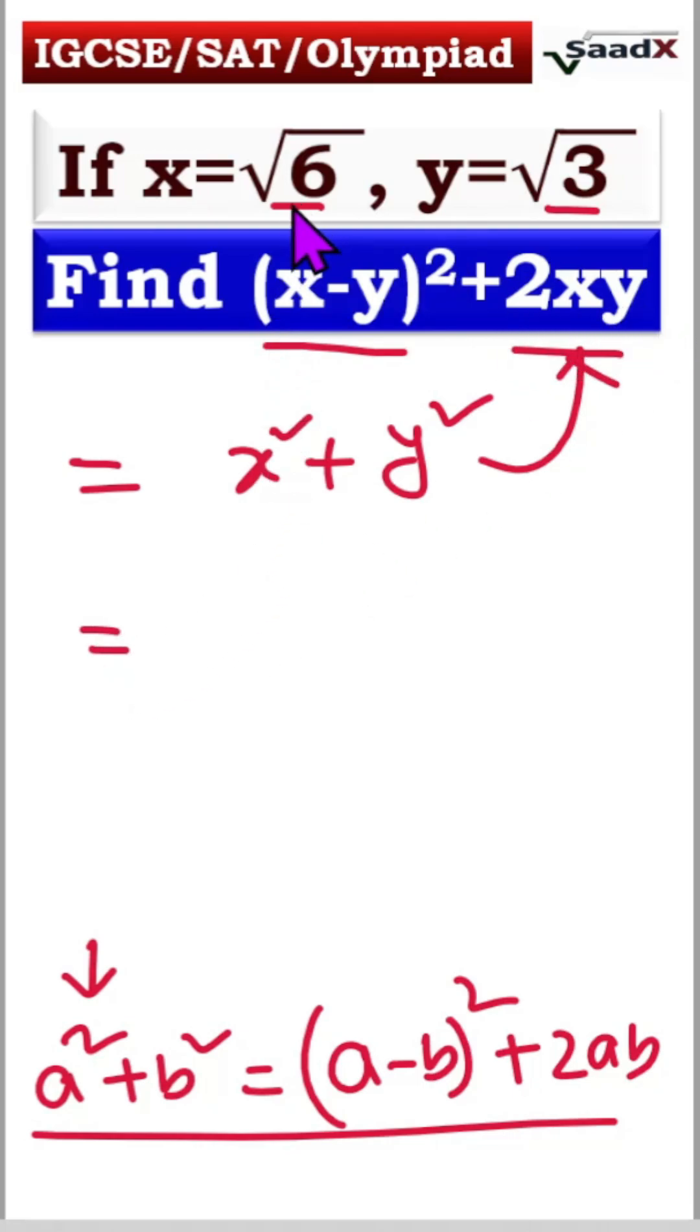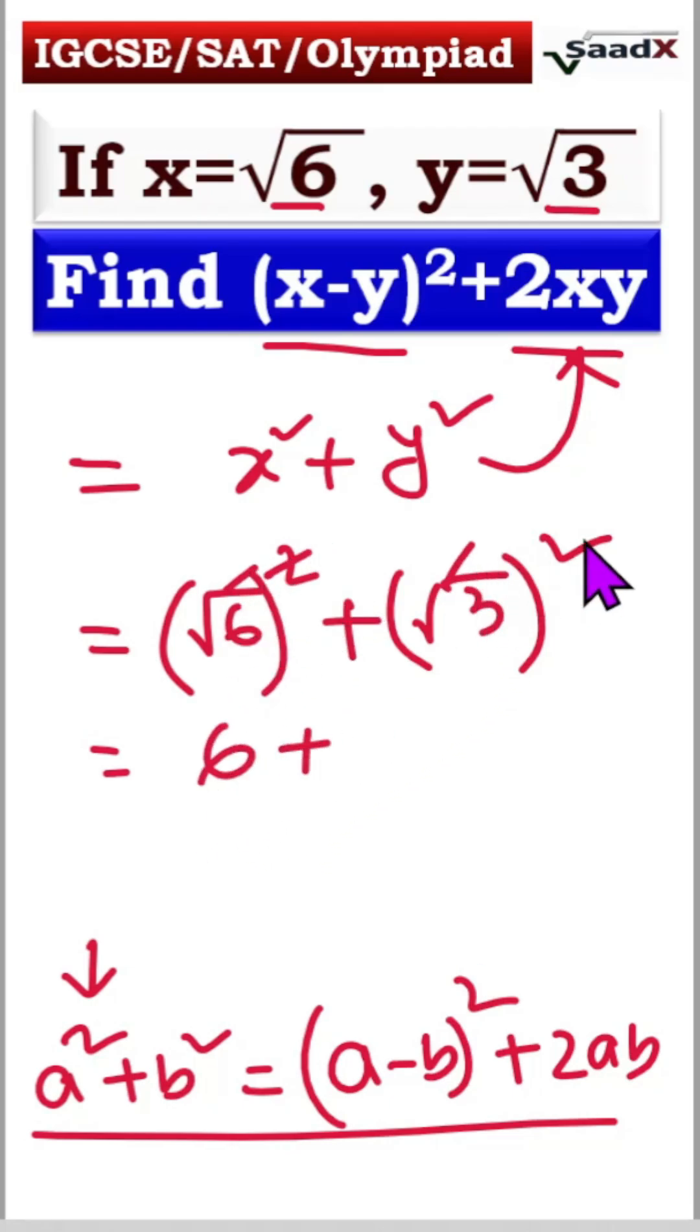Now very simple. x is root 6, then square. Plus y is root 3, then square. So here is root 6 square, root will be out, that's 6. Same here, root will be out, so here is 3. Our answer is 9. Very simple.